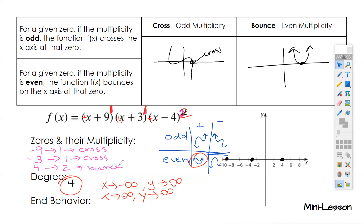So this all comes down to actually drawing the graph. We know that on the left-hand side it's positive at the end, so we're going to start up here and connect to the dots. Remember we said it crosses at negative nine, so we go down. Then at negative three it also crosses. And then at x equals four we're going to bounce. Notice how we have a degree of four and it looks like a W — positively facing on both ends.